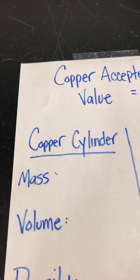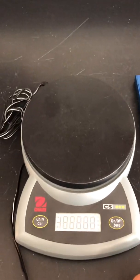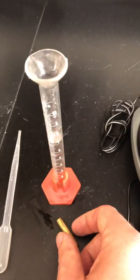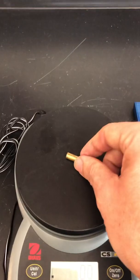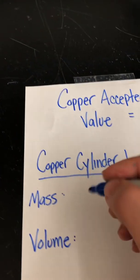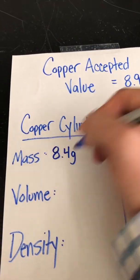So I'm going to start out with the copper cylinder. Mass, really easy. We turn on our balance, make sure you're on grams. You take the cylinder, put it onto the balance and that turns out to be 8.4 grams. So the mass of the cylinder, 8.4 grams.